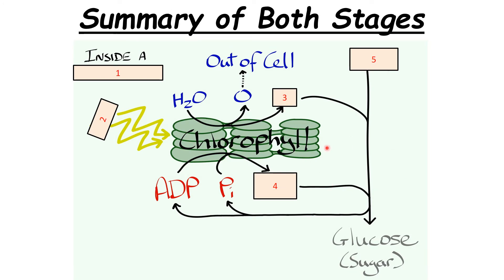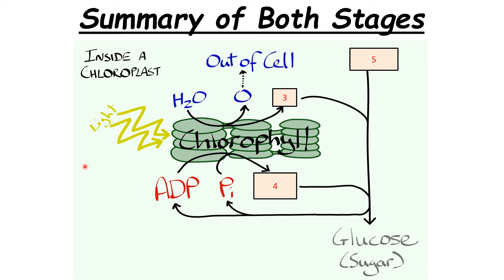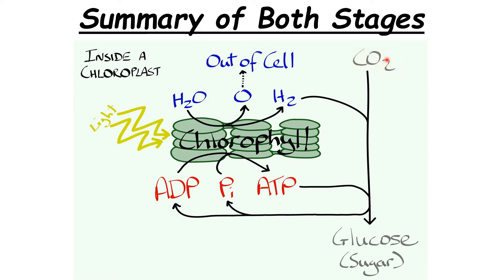Press pause and have a go at the diagram. The answers: number 1 is a chloroplast; number 2 depicts light energy; number 3 is water being split into oxygen and hydrogen; number 4 is light energy converted into chemical energy in the form of ATP; and hydrogen is combined with number 5, CO₂, to produce glucose.